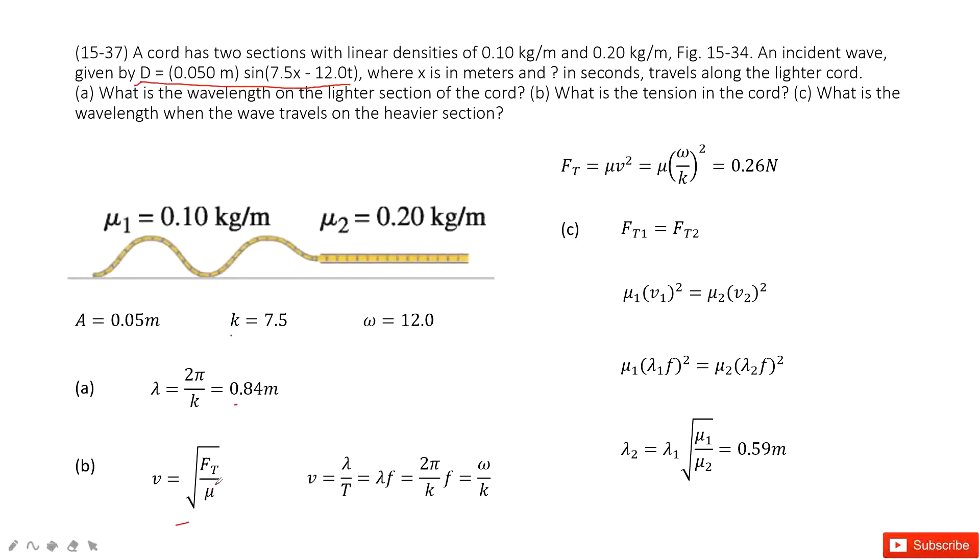Next, we need to find the velocity v. v is the wavelength divided by period. Because in one circle, the distance it traveled is 1 λ, 1 wavelength, and time taken is period T.